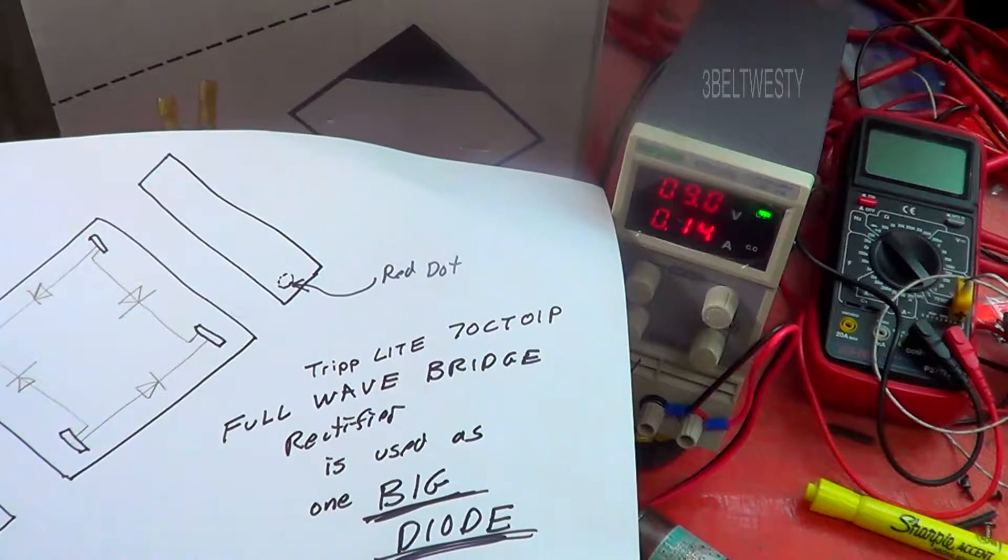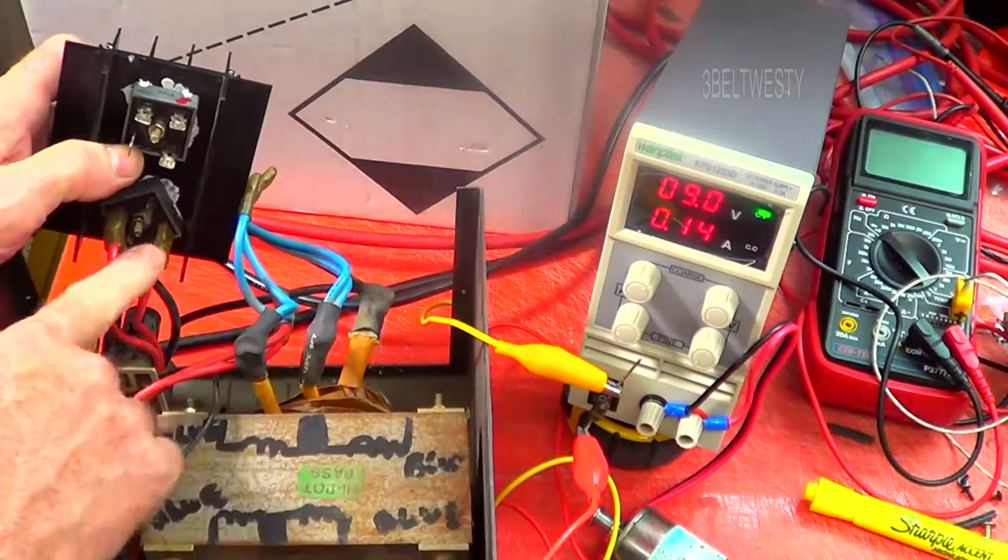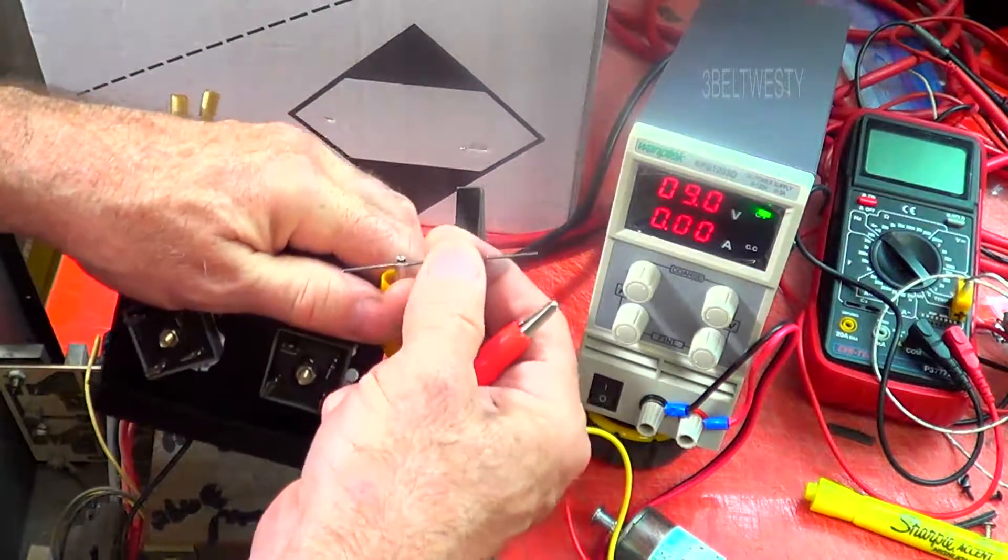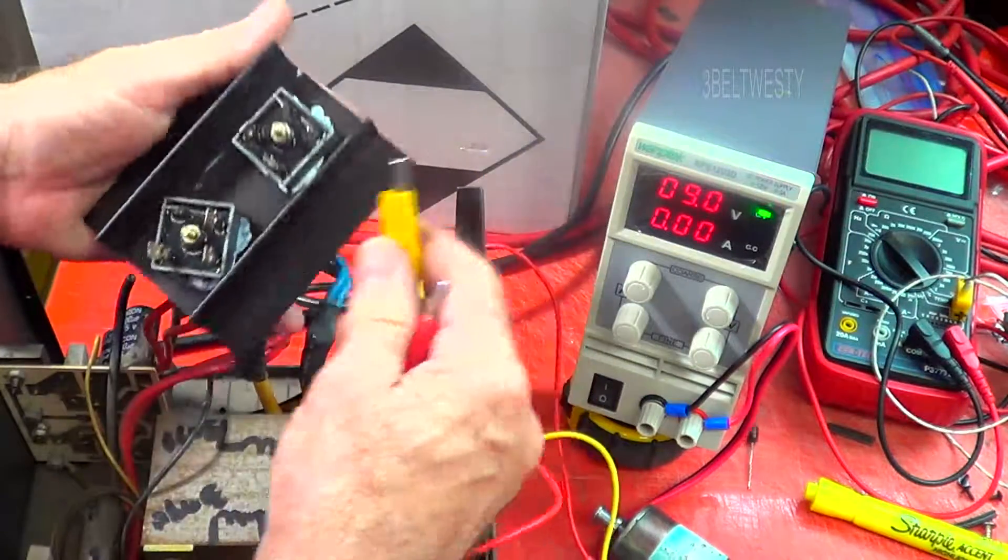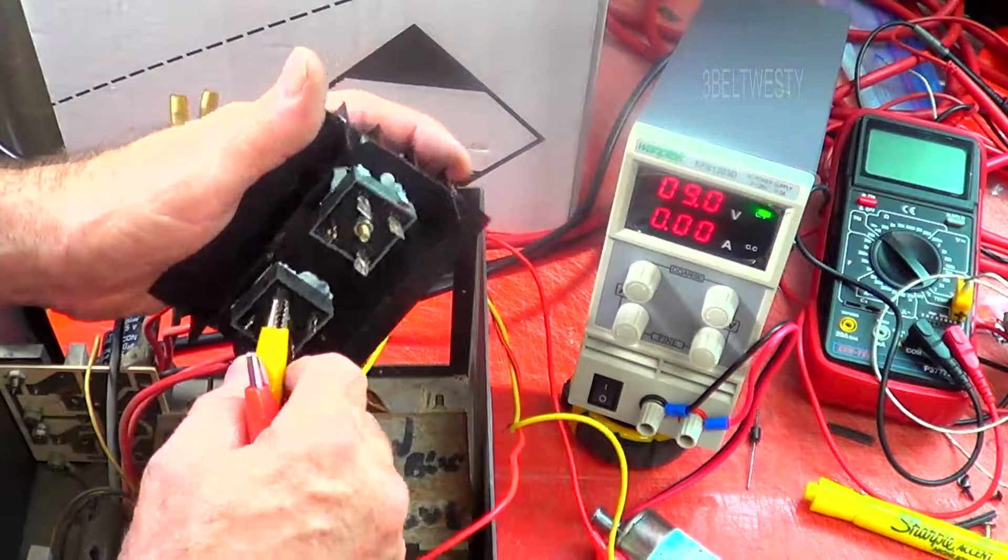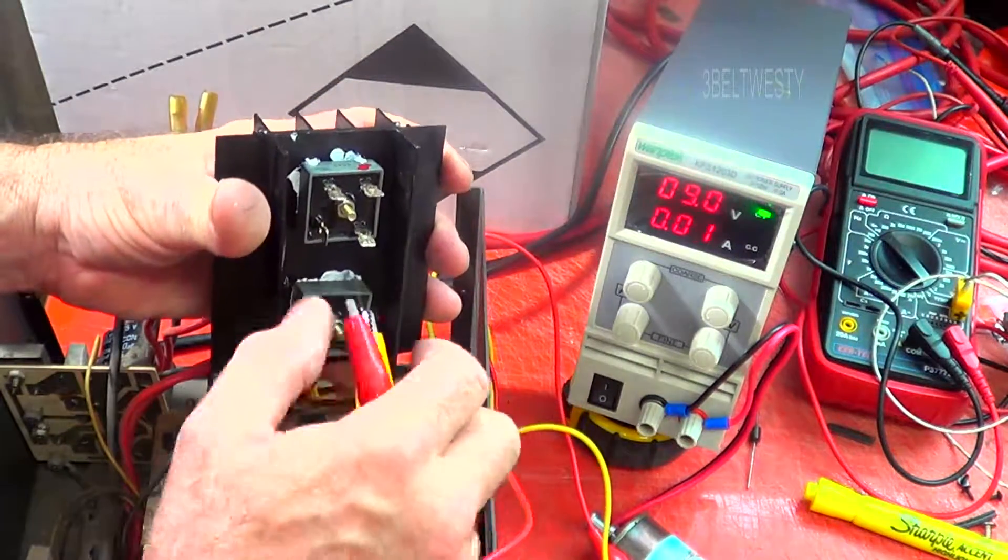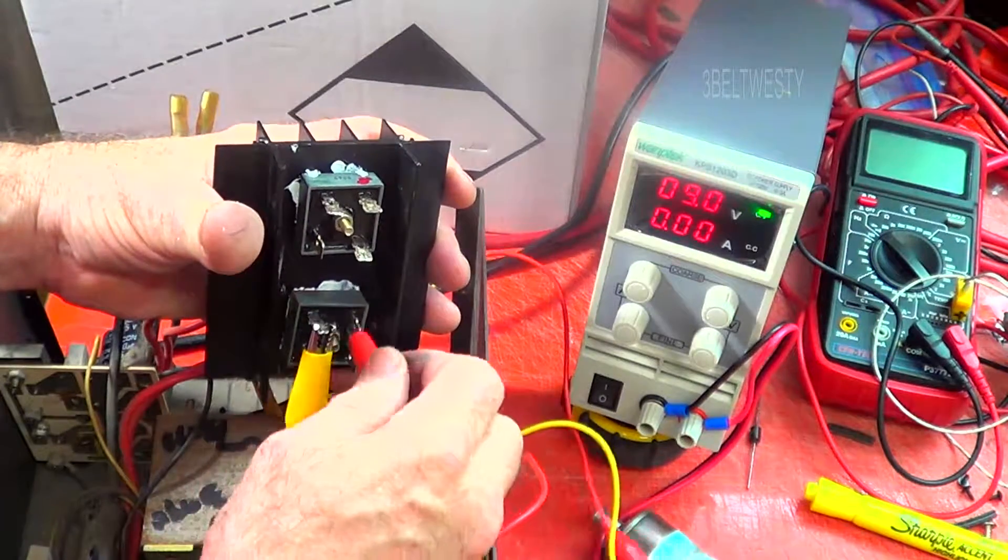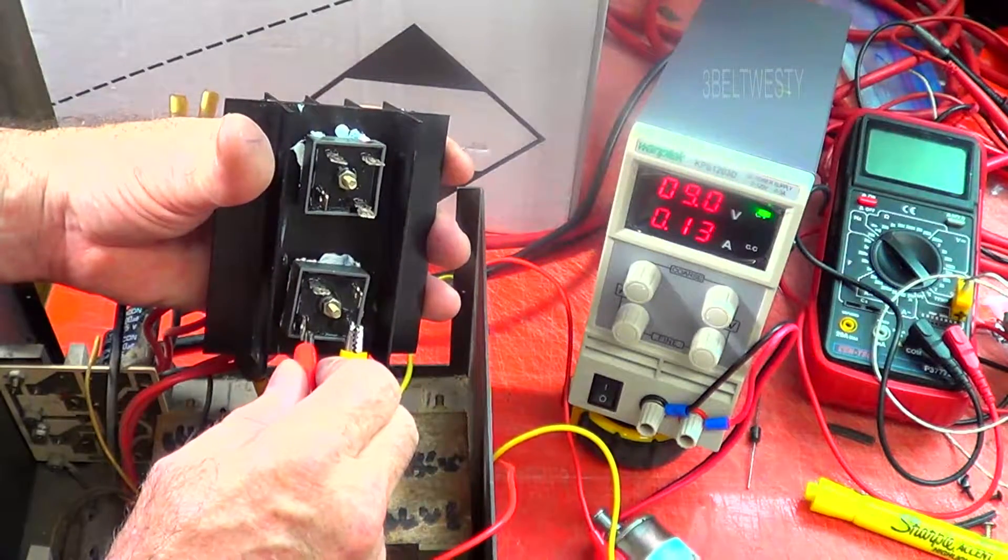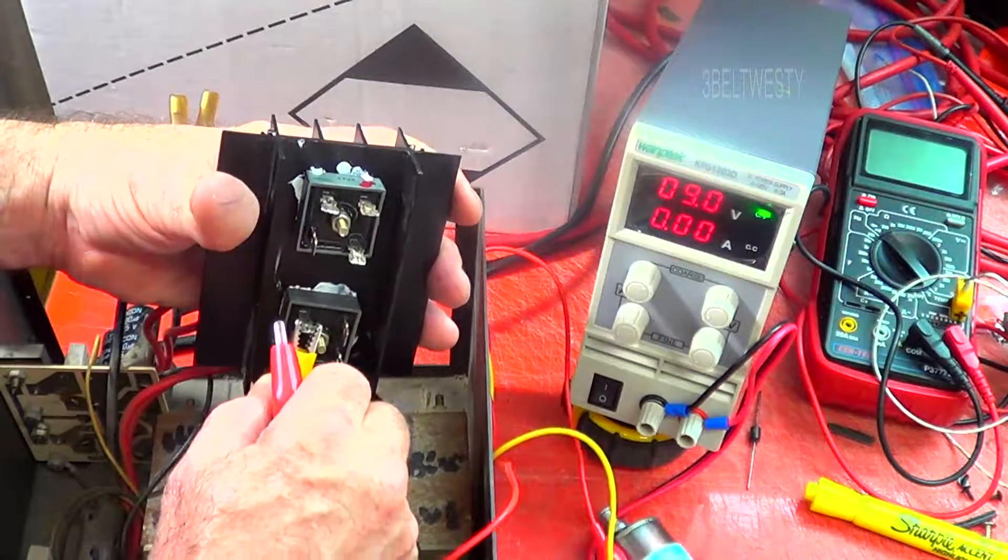So in summary this is a full wave bridge rectifier that's used as a big diode. And in this particular one here, this is the one that was shorted out. See this shouldn't run. That diode is shorted. It should only run one way. It's just a sanity check.